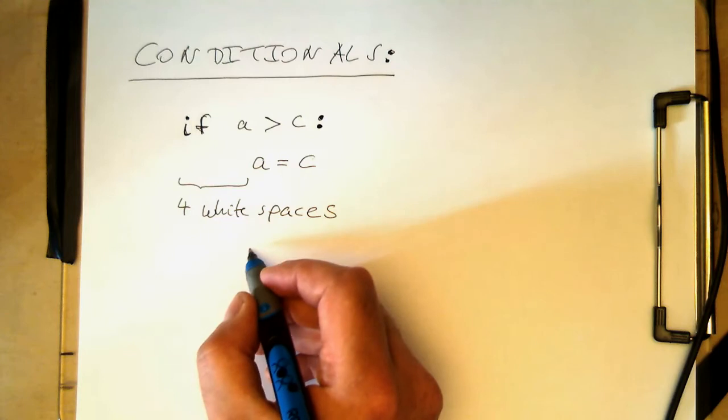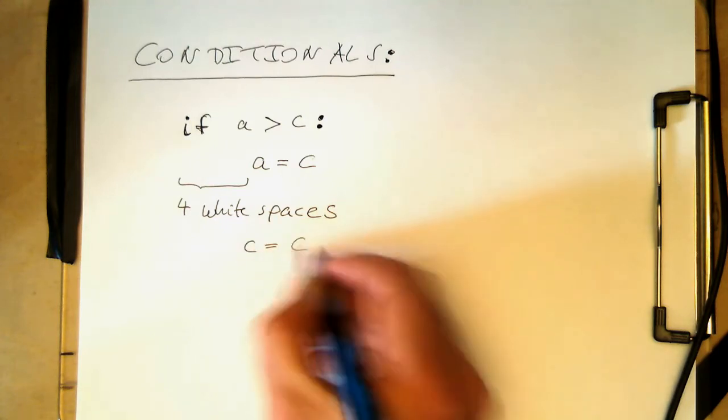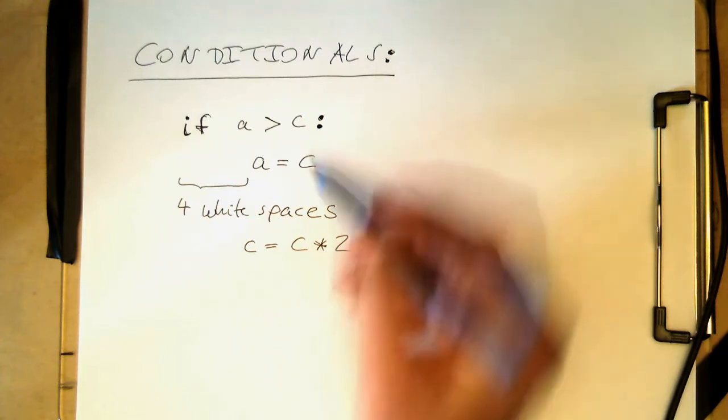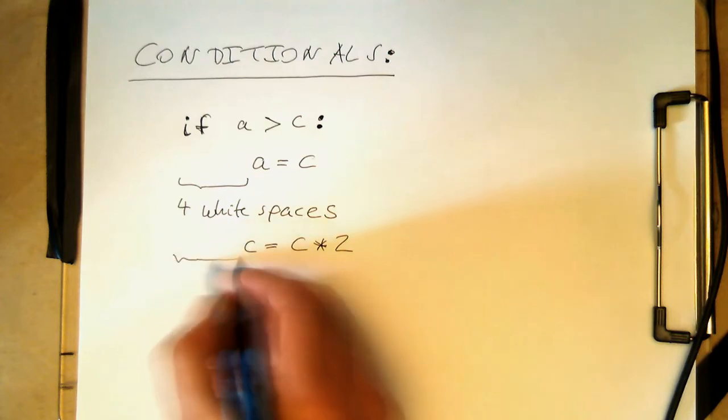So it's when these white spaces define that this operation here is done only if a is greater than c. Again, here we have four white spaces.